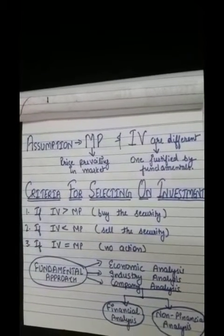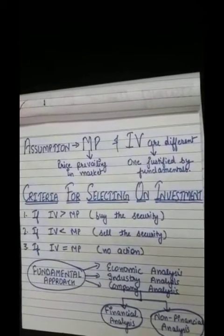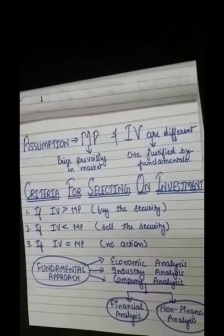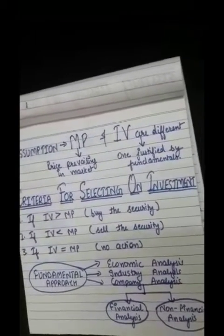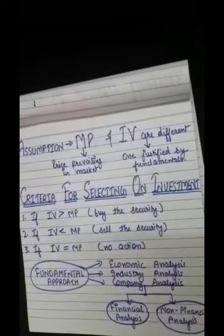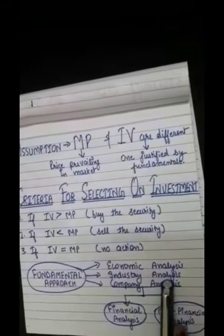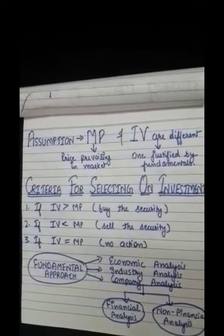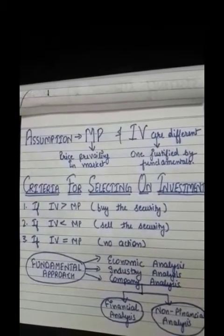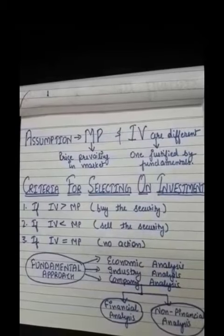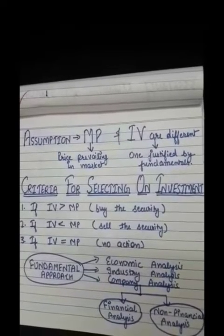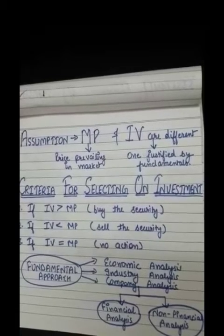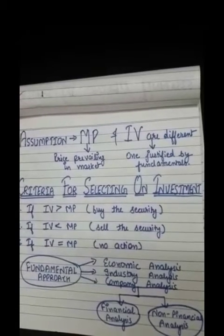The fundamental approach includes three kinds of analysis. First is economic analysis, which means analysis of the economy at the macro level — its performance in the past, present, and how it is expected to perform in the future. Second is industry analysis, where the analyst looks into various sectors in terms of various industries. An industry is a homogeneous group of companies with similar characteristics divided into one industrial group.